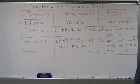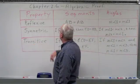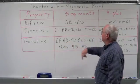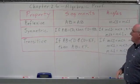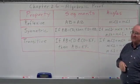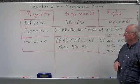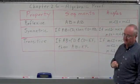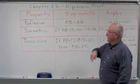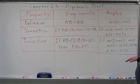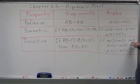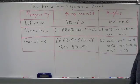Identical twin A looks like identical twin B, then identical twin B looks like identical twin A. Now, the transitive property for geometric entities: if the measurement of segment AB equals the measurement of segment CD, and the measurement of segment CD equals the measurement of segment EF, then the measurement of segment AB equals the measurement of segment EF. We have one, two, three different entities. If the first two are equal and the second and third are equal, then the first and the third are equal.